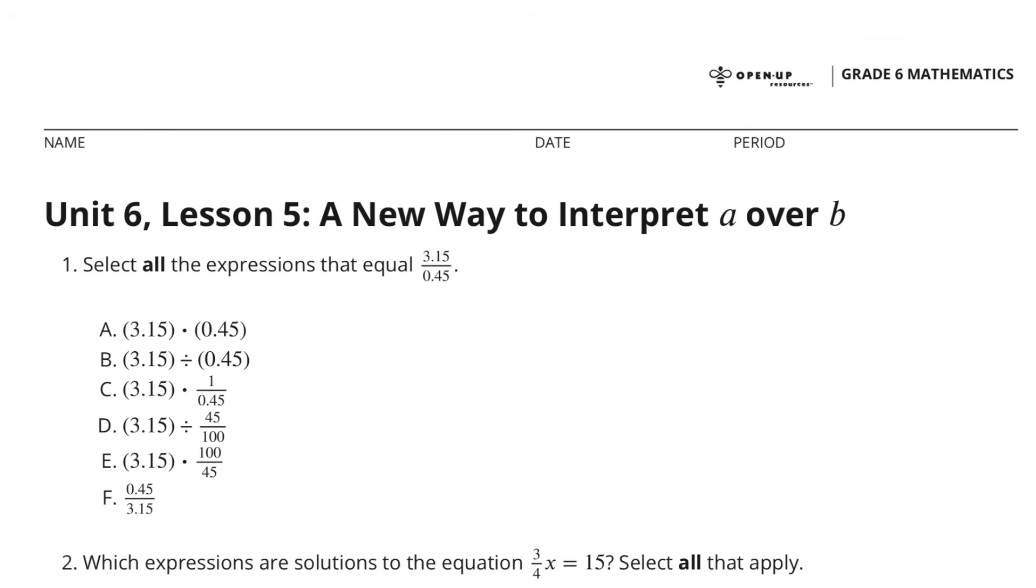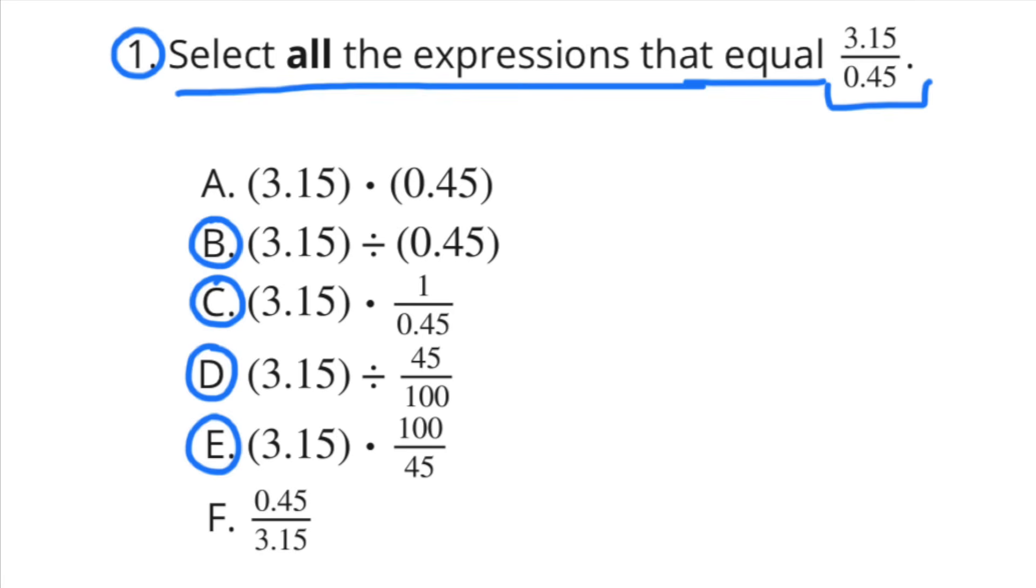Unit 6 Lesson 5, a new way to interpret A over B. Number 1. Select all expressions that equal 3 and 15 hundredths over 45 hundredths.